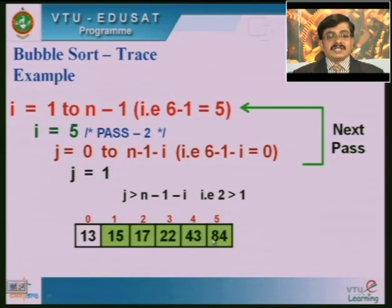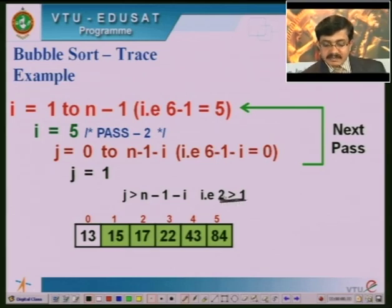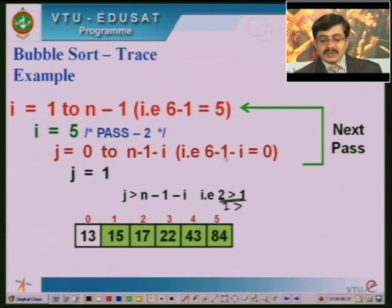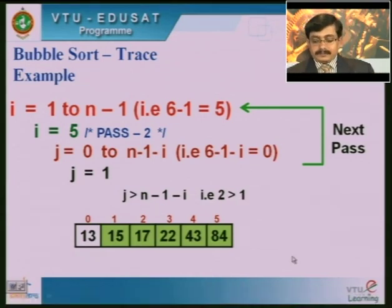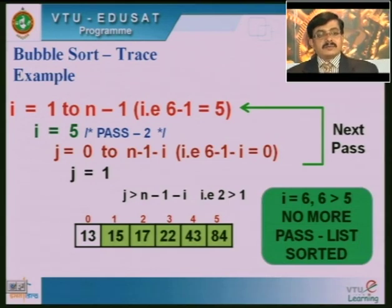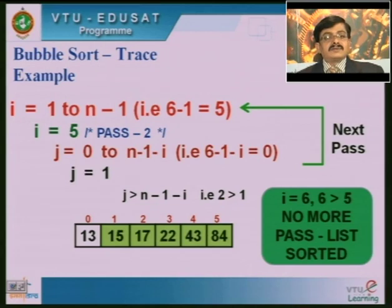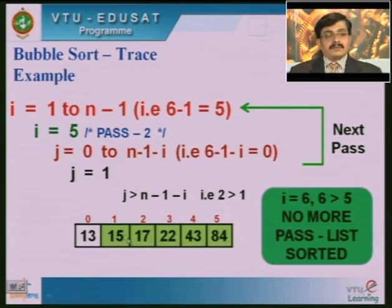When i becomes 6, which is greater than 5 (n−1), no more passes exist and the list is sorted. Out of 6 elements, when 5 have taken their proper positions, the 6th element automatically takes its position. The sorted result is 13, 15, 17, 22, 43, 84.